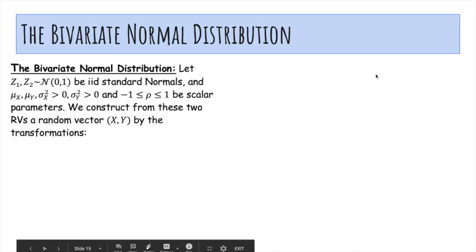So how do we generate a more general one? Let z1 and z2 be IID standard normals, and mu x, mu y, sigma squared x, sigma squared y, and rho be scalar parameters. I'm going to use these parameters and these independent standard normals to construct a bivariate Gaussian X comma Y. How do we do that?